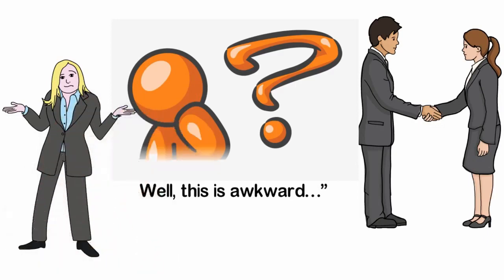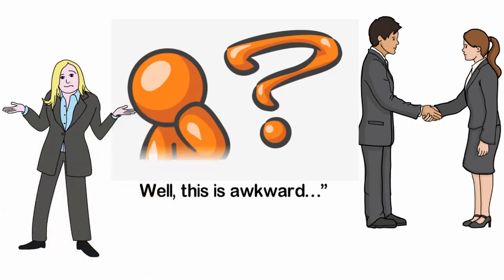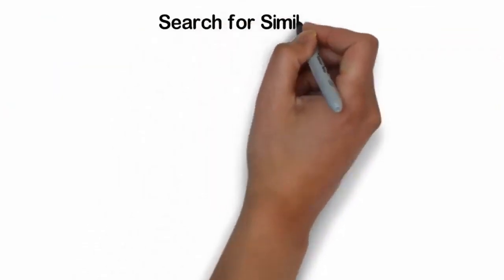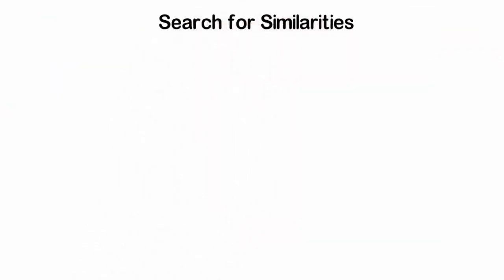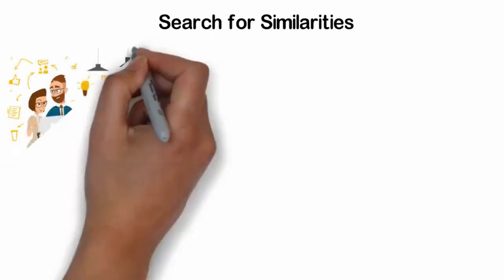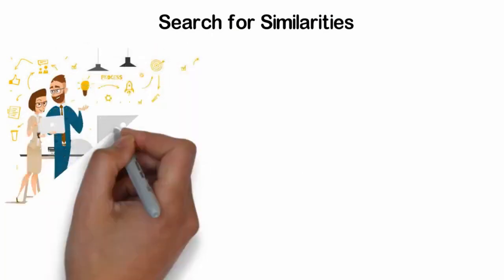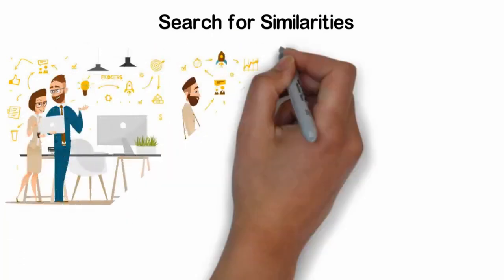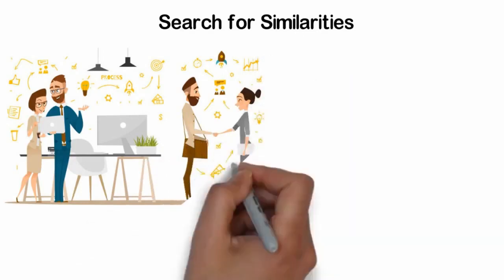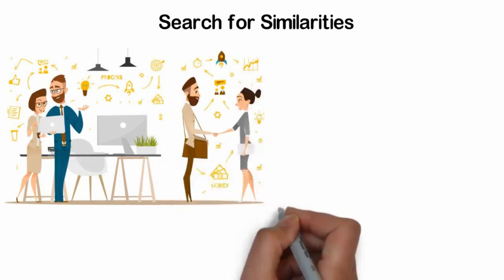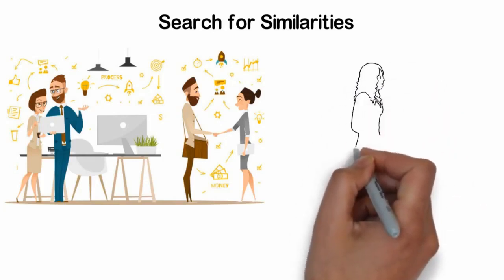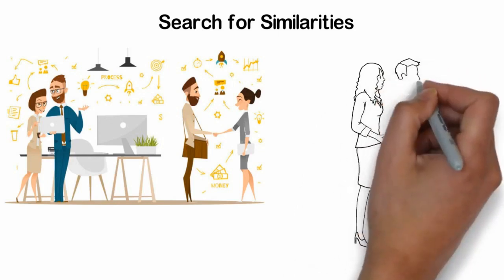Search for similarities. The key to keeping a conversation engaging is to find ground that you share in common. It could be a band that you enjoy or an experience that you happen to share. Having similar interests is a great way to get to know a person. It keeps the conversation moving and also makes you appear far more approachable.